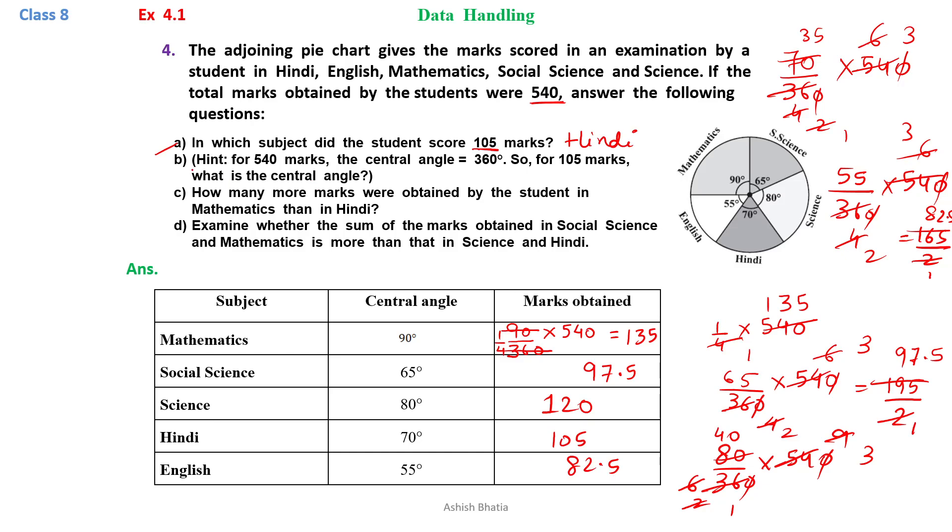Now here, how many more marks are obtained by student in Mathematics than in Hindi? We have to compare marks of Maths and Hindi. The answer is 30. 135 minus 105 is 30.